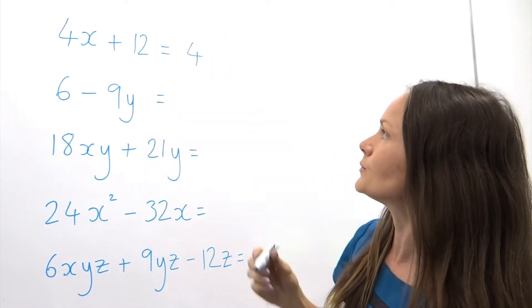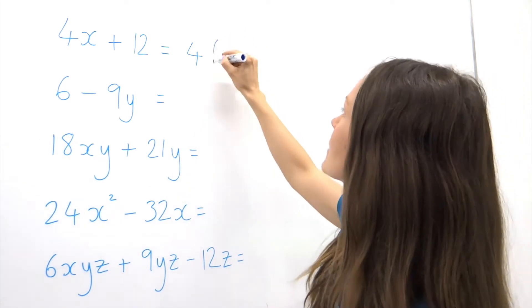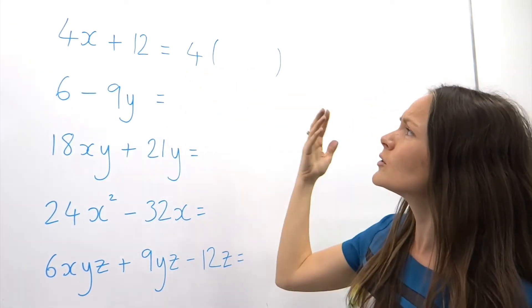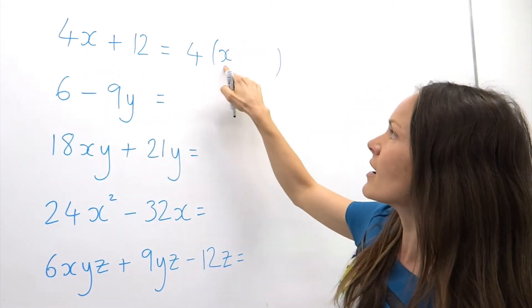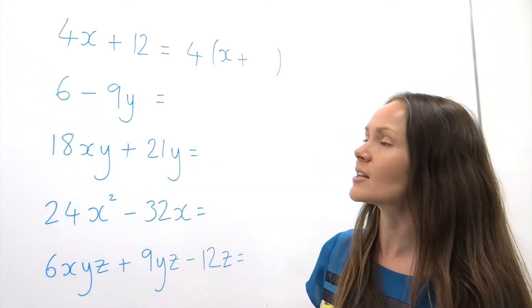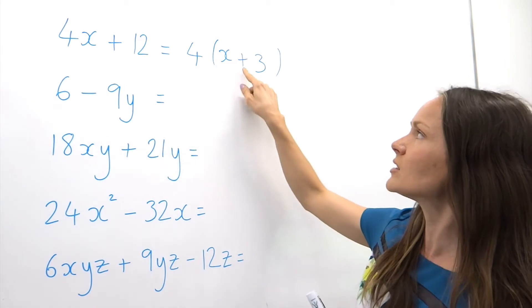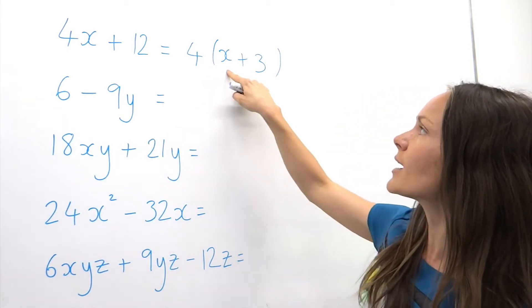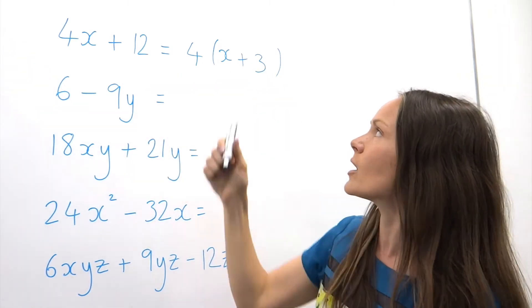Now that I've written down everything that's common between 4x and 12, I can open my set of brackets and work out what goes inside. Remember, brackets mean multiply, so you're asking yourself: what do you multiply 4 by to get back to 4x? I can see there's a plus here, so I put that in too. What do I multiply 4 by to get back to positive 12? It's just positive 3. Do a little check in your head: 4 times x is 4x, and 4 times 3 is 12.